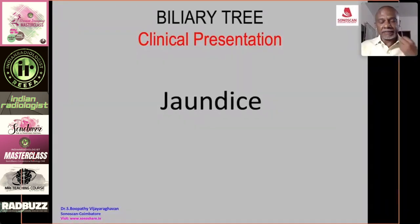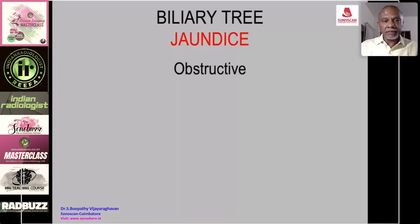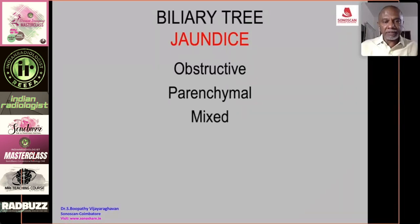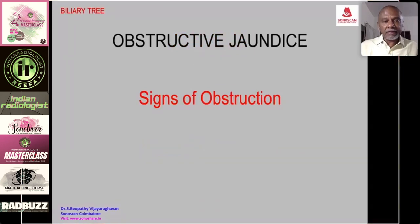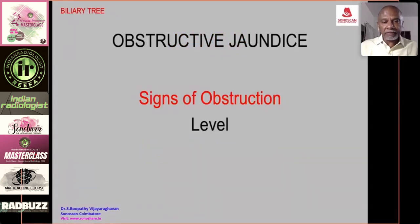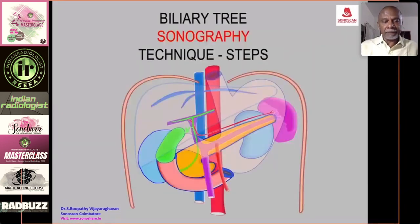The common clinical presentation of an abnormal biliary tree is jaundice. Once the patient presents with jaundice, the role of ultrasound is to differentiate whether it is obstruction, parenchymal, or mixed. For obstructive jaundice, the role of ultrasound is to see signs of obstruction, then determine the level of obstruction, and finally the cause of obstruction.